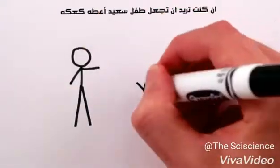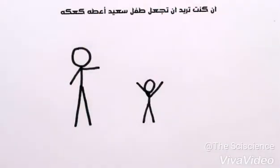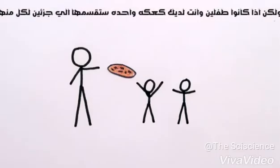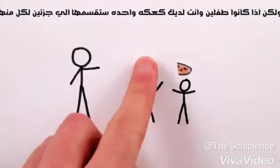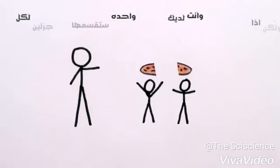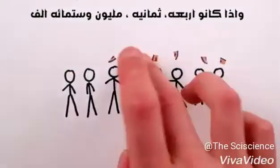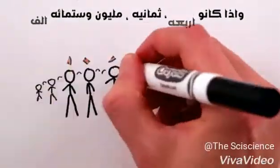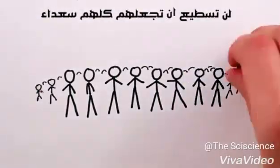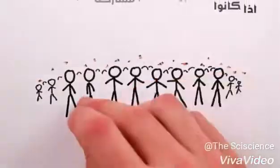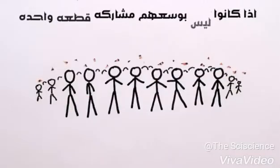If you want to make a kid happy, give them a cookie. But if there are two kids and you only have one cookie, you'll only be able to cheer them up half as much. And if there are four or eight or sixteen hundred thousand, you're not going to make them very happy at all if they have to share one cookie between them.